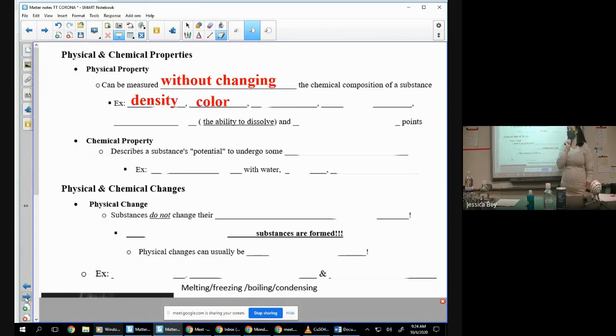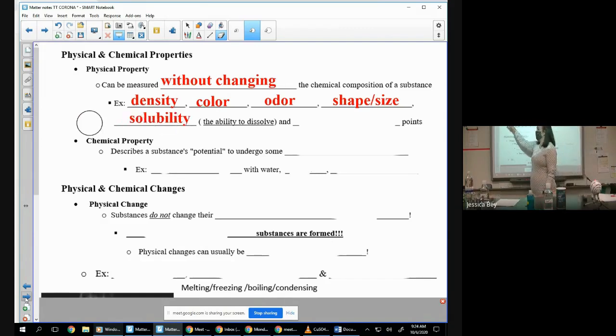Another one could be color. Odor. Anything that you're picking up with your senses are physical properties. Shape or size of matter. And another really big one that we want to talk about is solubility, and I want to take a second to talk about what solubility is. Cause I'm going to assume that you guys know what solubility is, that is something you kind of got to know coming into chemistry.